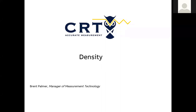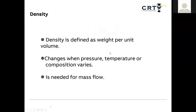Let's get started with density. If you have questions, throw them in the chat or we'll have a Q&A at the end. Density is one of the most confusing topics in our industry — it's taken me a while to get my head around it. Density is defined as weight per unit of volume. In the US, that's typically grams per cubic centimeter or pounds per cubic foot. Density changes when pressure, temperature, or composition varies within the product.